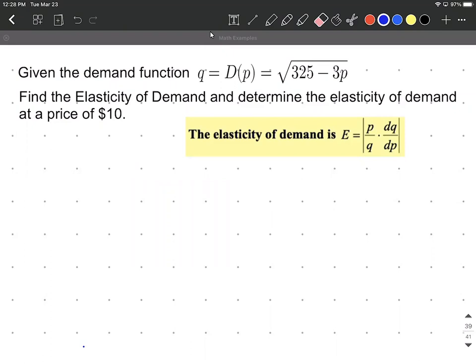So we have our formula for elasticity of demand. It's going to be our price divided by the quantity multiplied by the derivative of Q with respect to P. So this is the same thing as D prime of P in our situation, evaluated at 10.